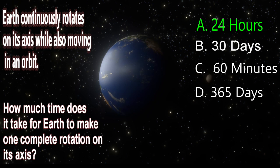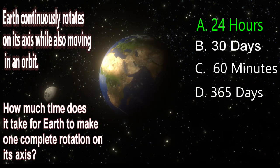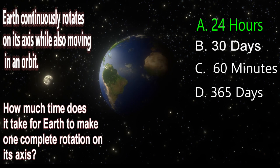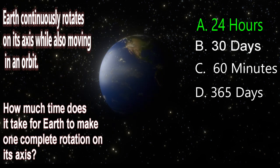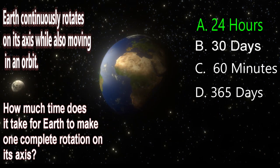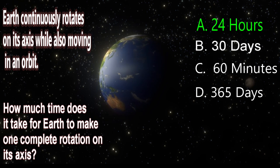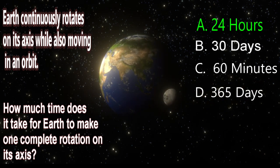It takes Earth about 24 hours to make one full rotation on its axis. This rotation is responsible for the day and night cycle we experience. As the Earth spins, the side facing the Sun experiences daylight, while the side facing away from the Sun is in darkness. This gives us daylight and nighttime within a single 24-hour period.